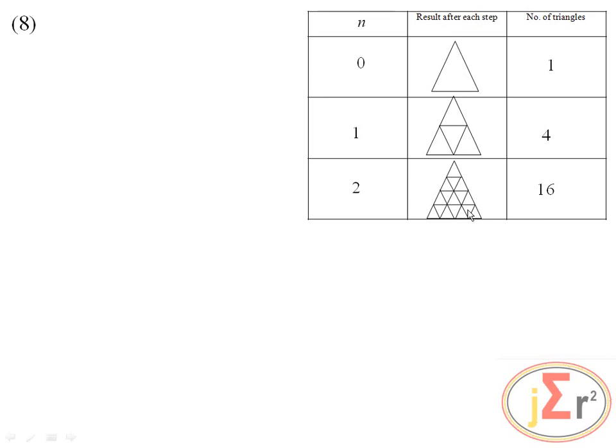The table below shows the result when the above procedure has been repeated twice, that is when n is equal to 2. We need to calculate the number of triangles formed when n is equal to 3.